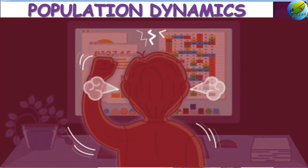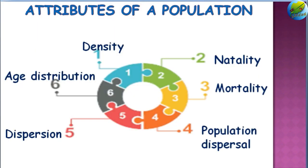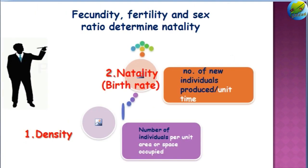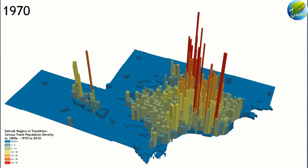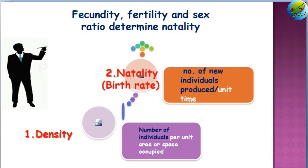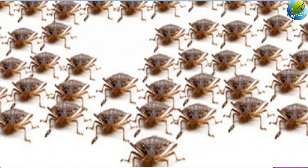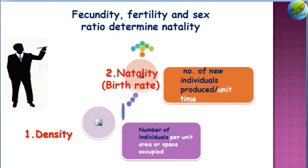Before getting into the topic, let us understand some of the attributes of a population. There are six major attributes of a population. The first one is density — it is the number of individuals per unit area or the space occupied. In other words, insects per meter square will denote the insect population density in the square meter area.